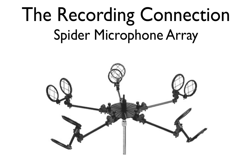Let's go over the spider microphone array. In this technique, you will need a special microphone mount with five arms that point out like a star. At the end of each arm point, there should be a condenser microphone pointing outwards. If you have this special microphone stand, it would be very easy to create a surround sound recording in nearly any situation.